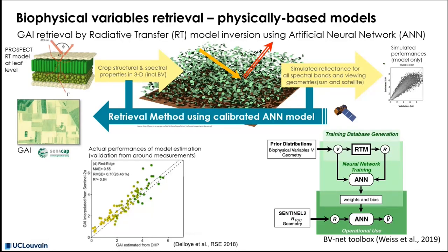The model performance can be quantified at the model level by using only the input and output of the model, as you can see on the right side of the image. But to do a proper validation, we need to compare the biophysical variable estimated by satellite observation with regards to actual reference ground measurements, like here on the graph below.